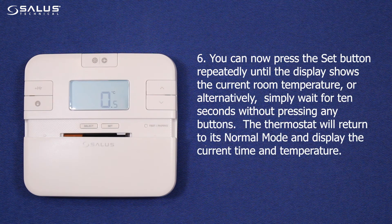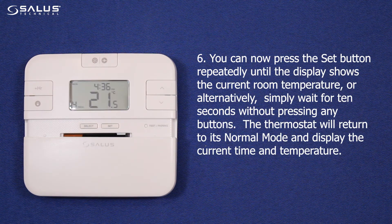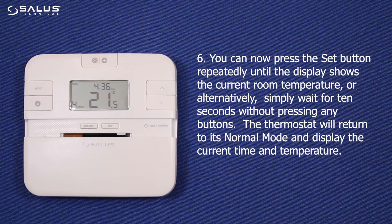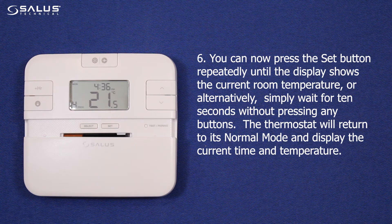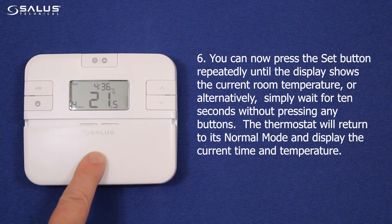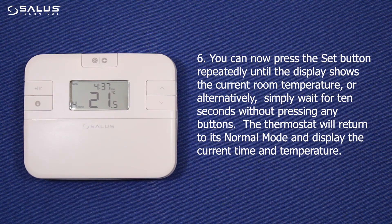Step 6. You can now press the Set button repeatedly until the display shows the current room temperature, or alternatively, simply wait for 10 seconds without pressing any buttons. The thermostat will return to its normal mode and display the current time and temperature.